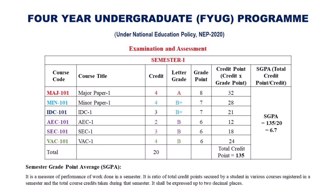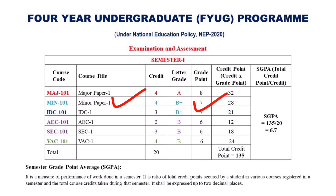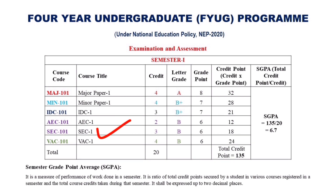The grade points for Major Paper 1 will be 8, Minor Paper 1 will be 7, IDC/MDC paper will be 7, and for AEC, SEC, and VAC papers will be 6 each. The credit points are: Major Paper = 4 × 8 = 32, Minor Paper = 4 × 7 = 28, IDC/MDC = 3 × 7 = 21, AEC = 2 × 6 = 12, SEC = 3 × 6 = 18, and VAC = 4 × 6 = 24.